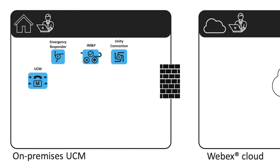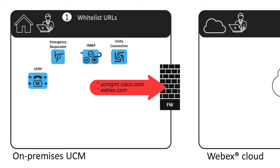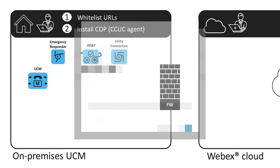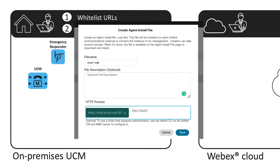Now, configuration-wise, configure a whitelist in your firewall to allow outbound connections to the cloud on TCP port 443. After that, you can install a cop file in your cluster to enable the CCUC agent. The cop file is created and downloaded from your own Control Hub site, where proxy support can be included.